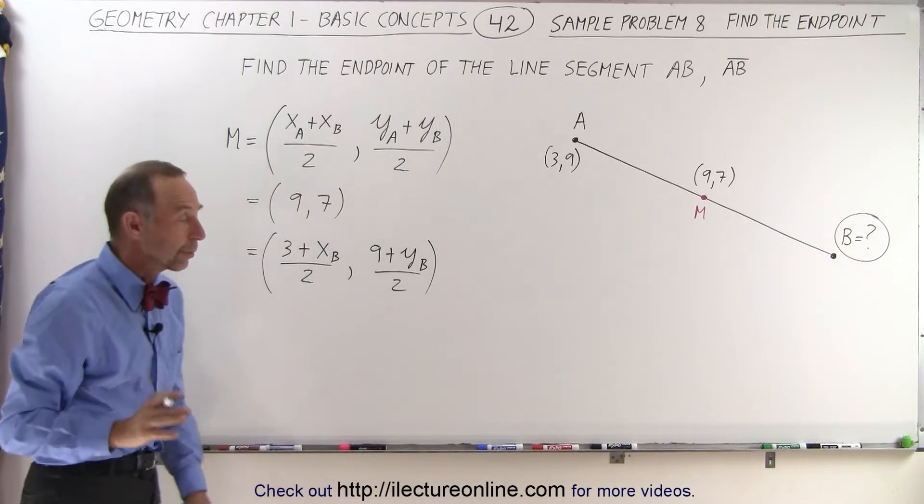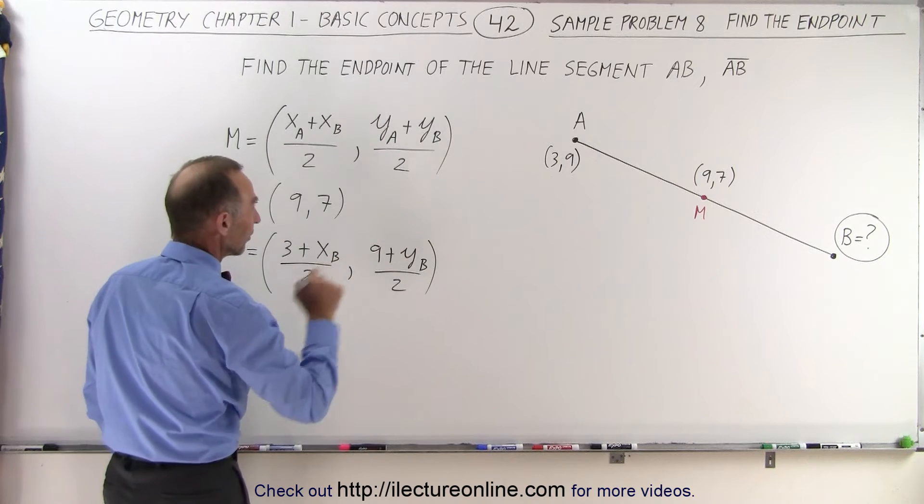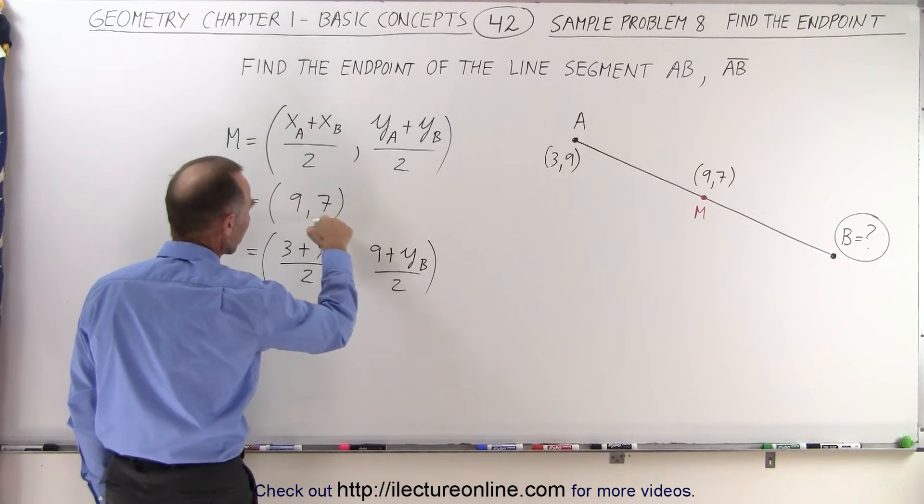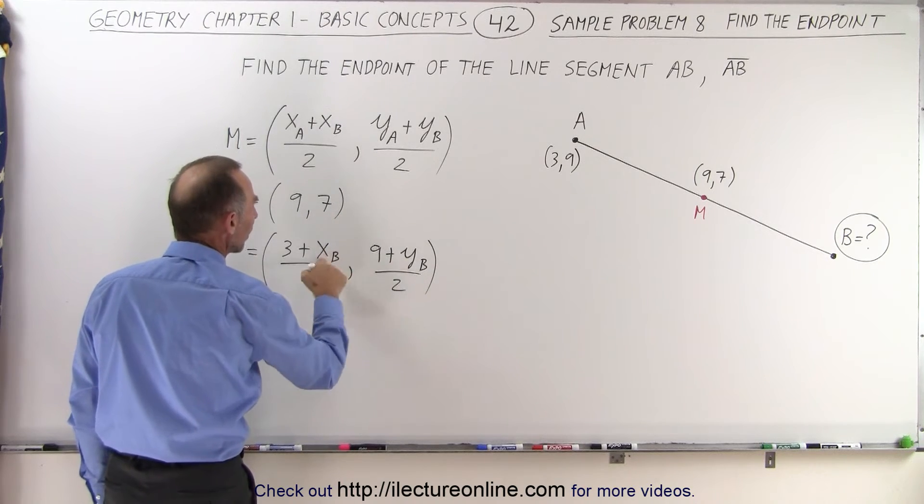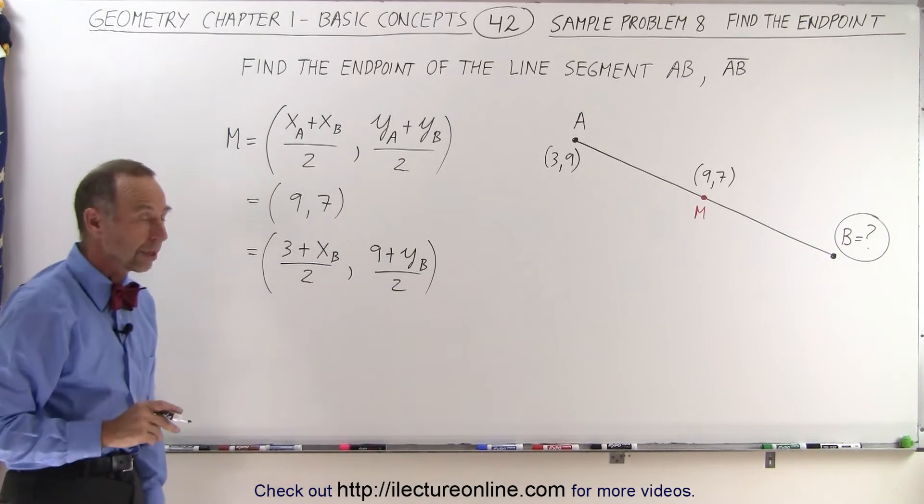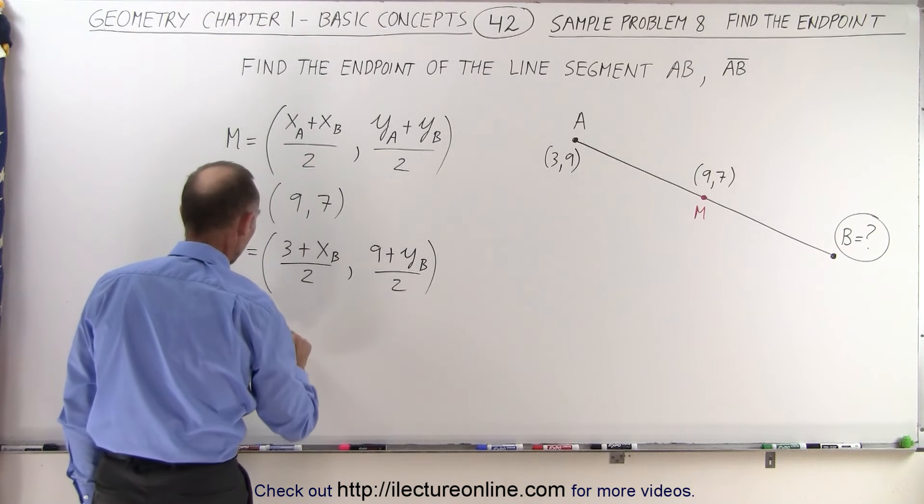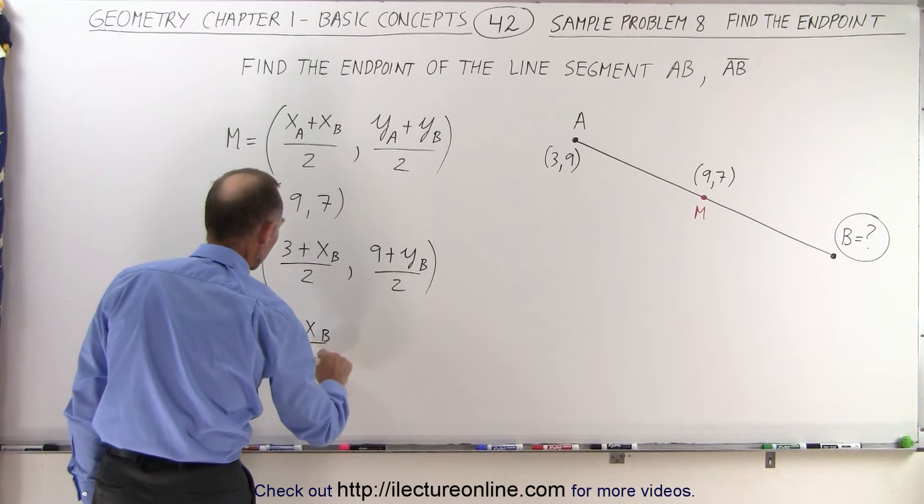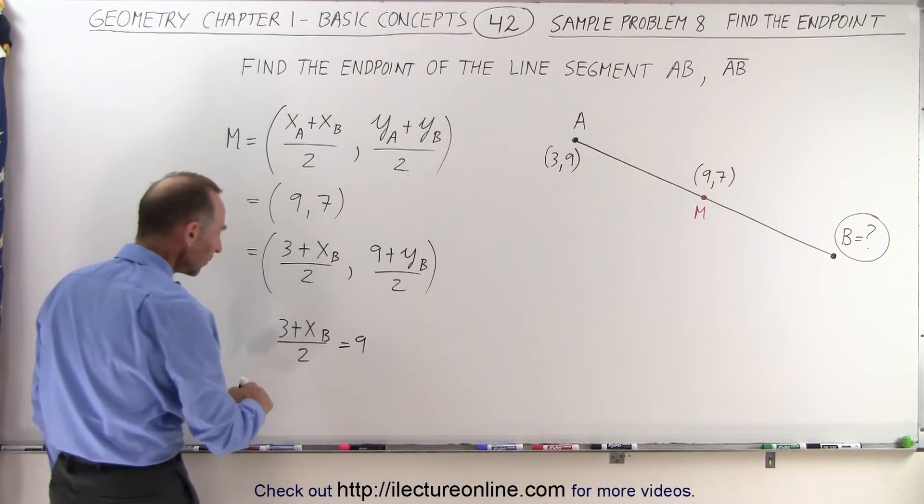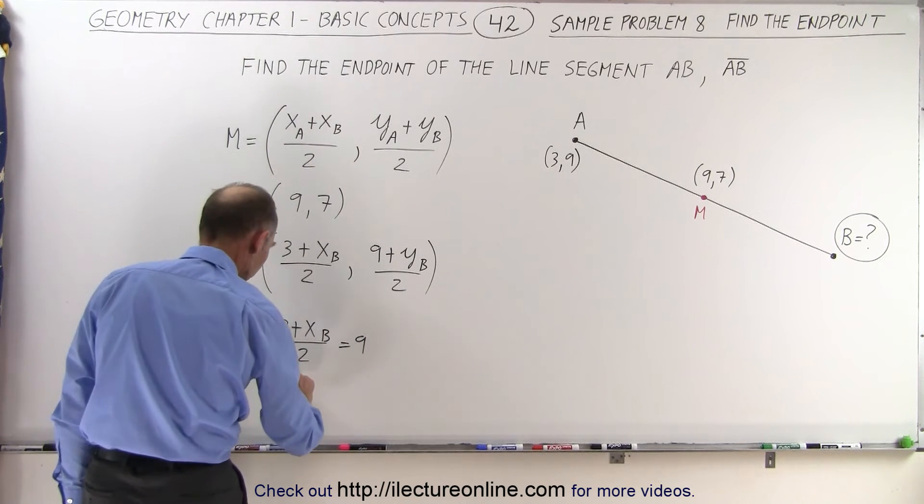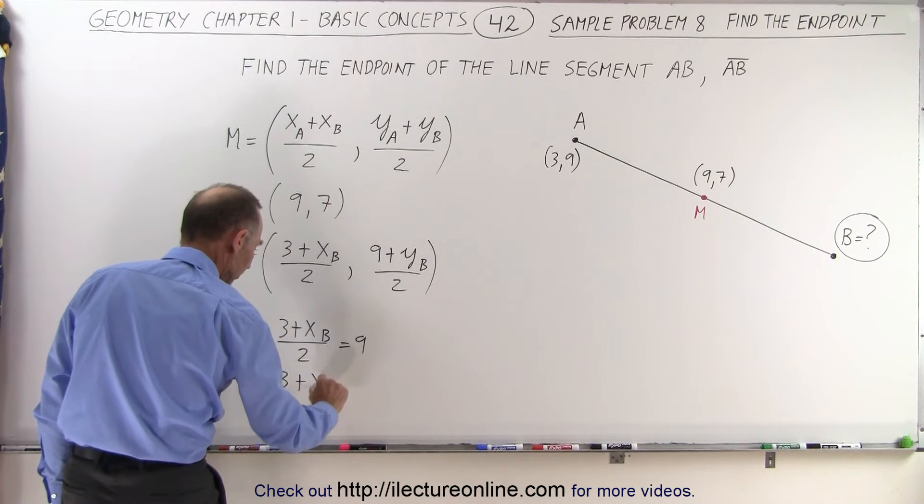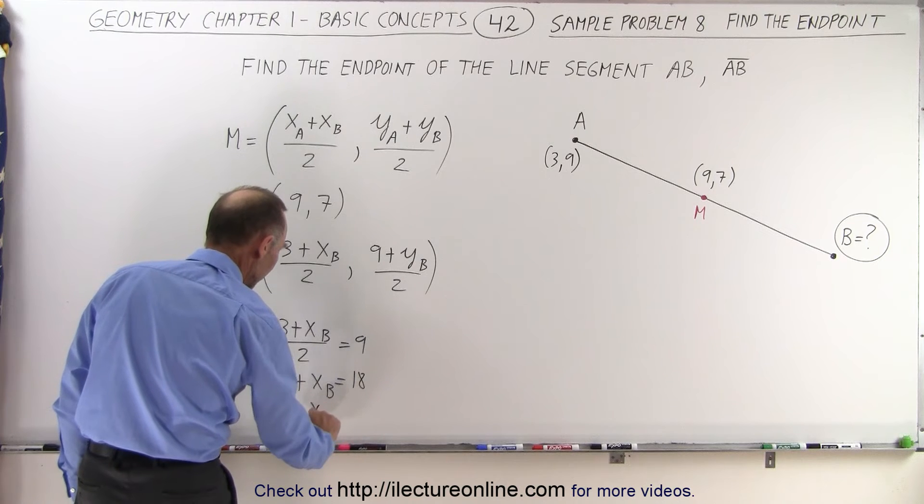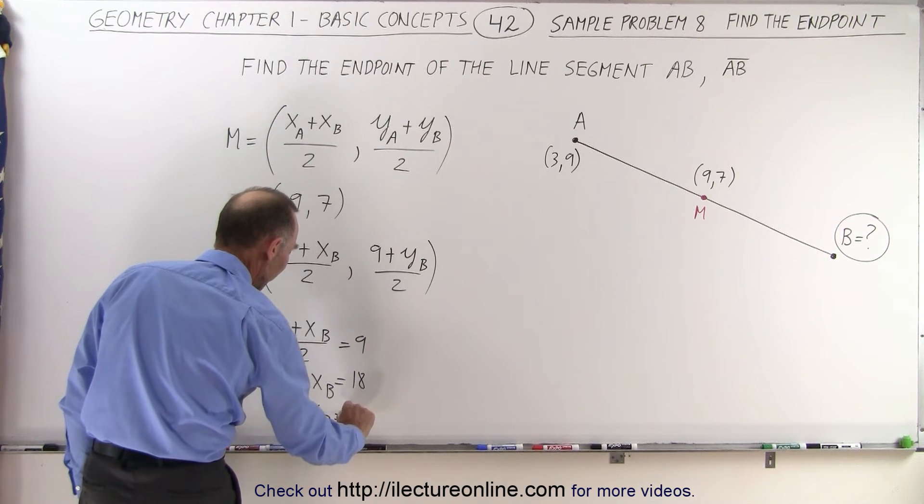So now we can come up with the two equations to find the other endpoint. We know that this must equal 9 and this here must equal 7, which leaves us only with one unknown in each of the two equations. So starting with the first one, we can say that 3 plus x sub b divided by 2 is equal to 9. Multiplying both sides by 2, we get 3 plus x sub b is equal to 18. Subtracting 3 from both sides, we get x sub b is equal to 15.